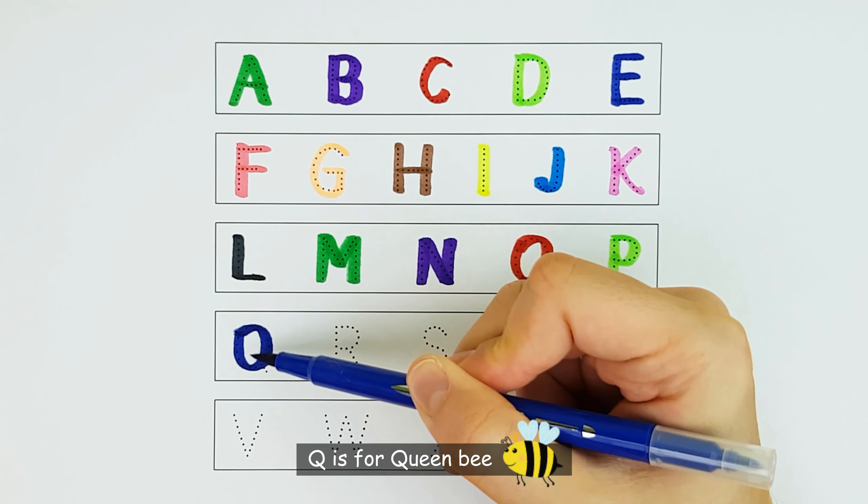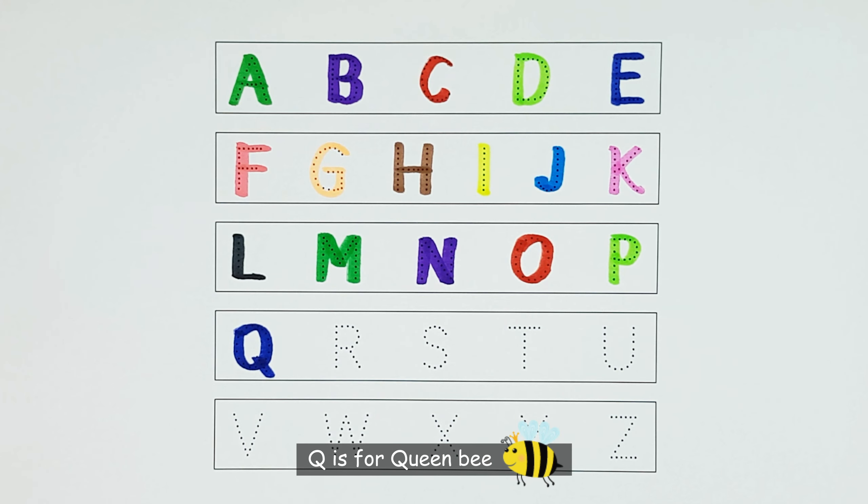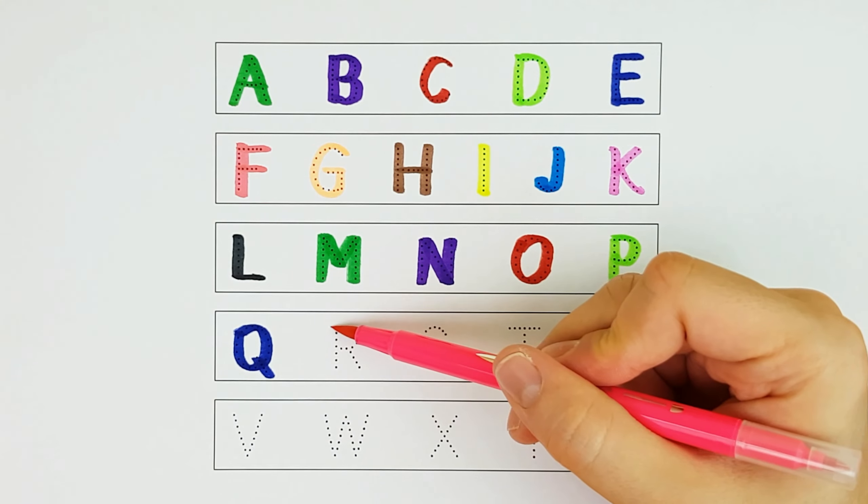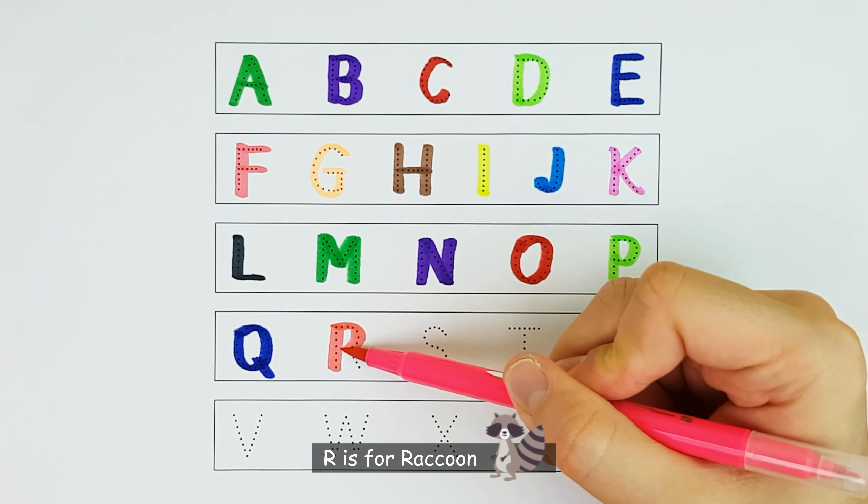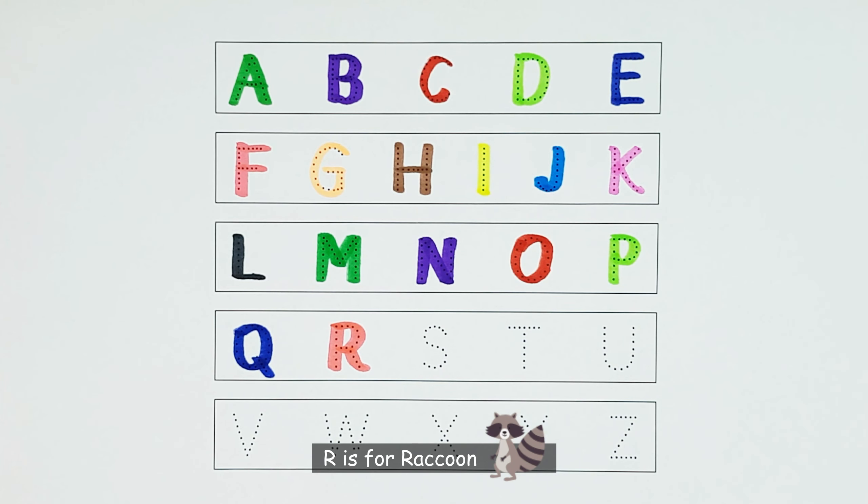Q. Q is for queen bee. Q. R. R is for raccoon. R.